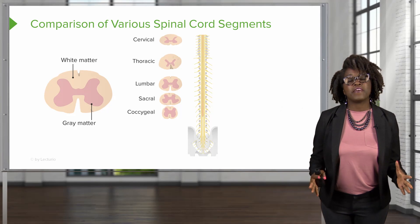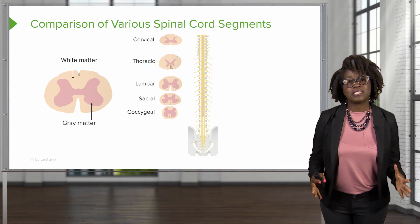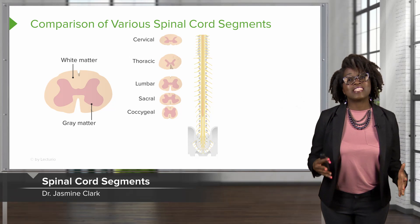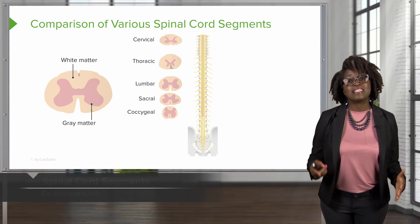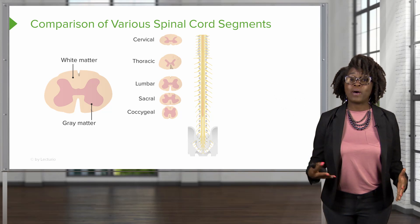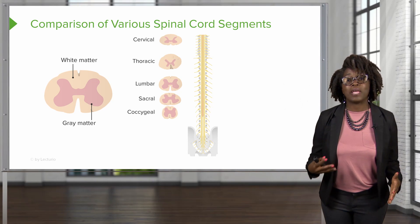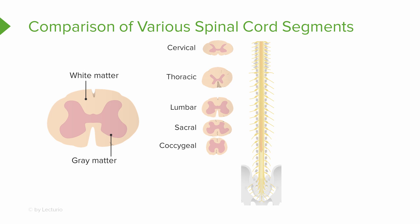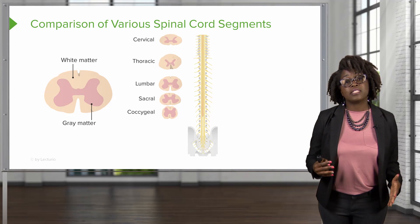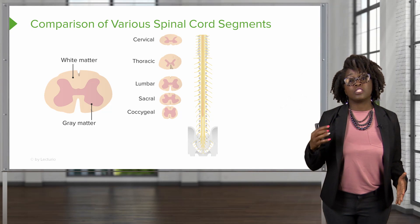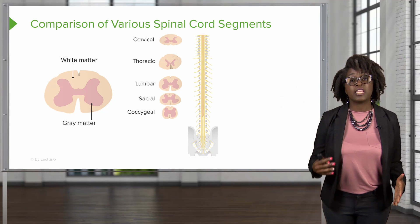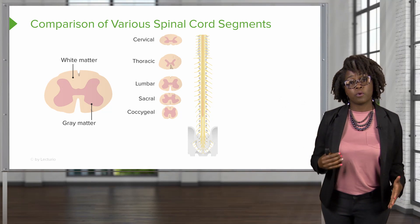Now let's look at the various spinal cord segments. You'll notice that the segments can vary by size, shape, and amounts and distributions of gray and white matter. Each spinal cord segment refers to the part of the vertebrae where the spinal nerve exits from the intervertebral foramina. You'll notice that the white matter begins to decrease as you descend from the cervical portion to the sacral portion.